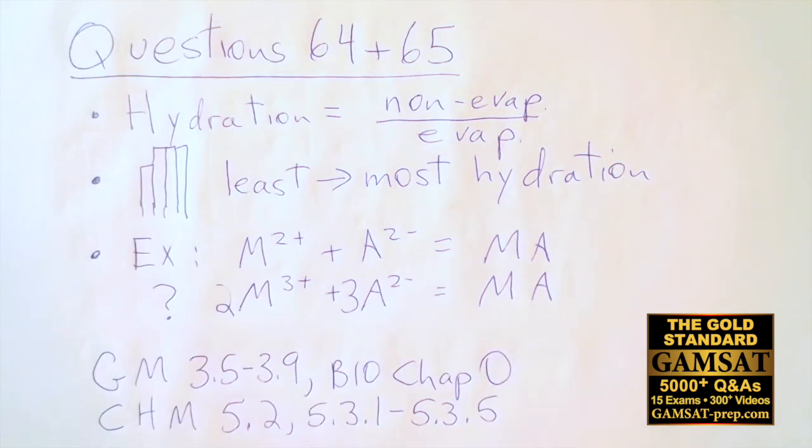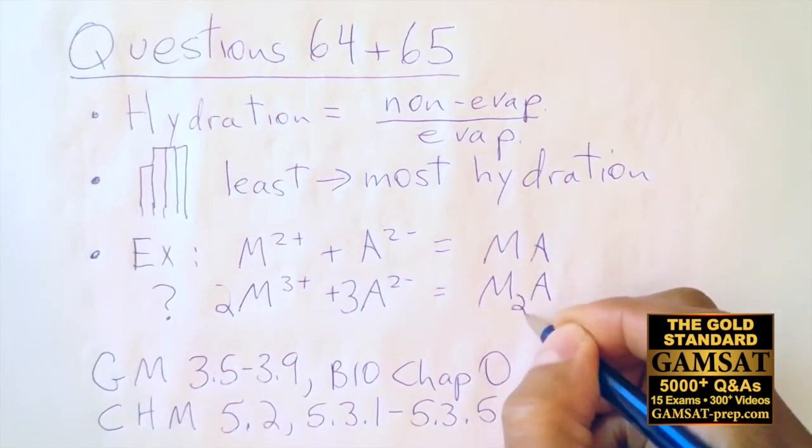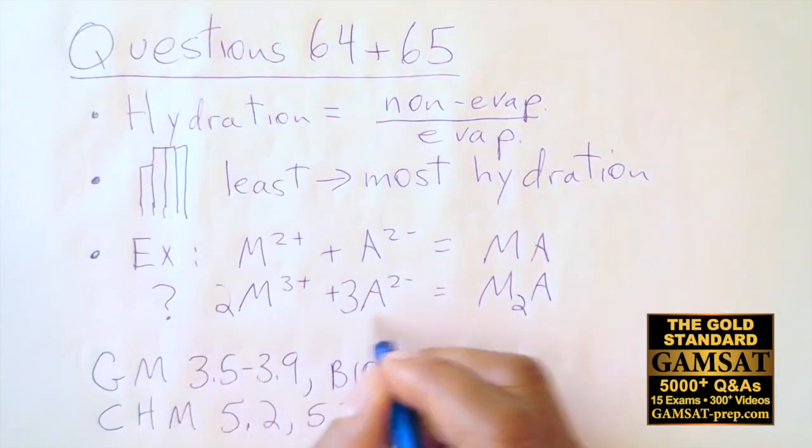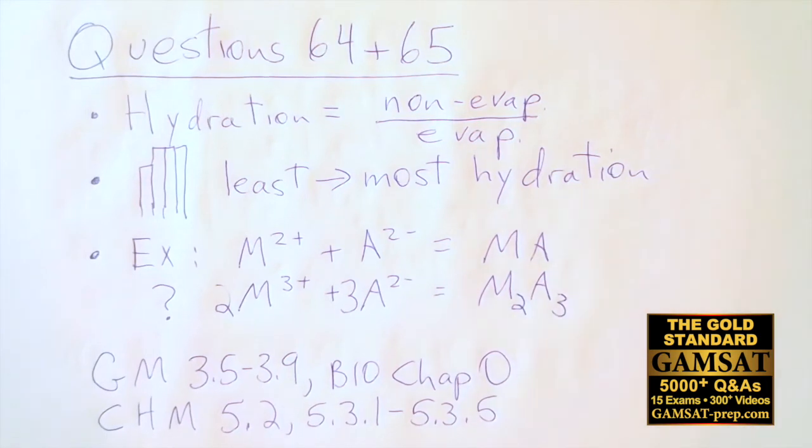And then the overall charge would be plus six minus six zero, and that would equal the charge here which is neutral. So now I have to deal with the subscripts on this side to balance the number of moles. I would put a two over here because there's two M's and three A's, so I need to put a three there. Now the charges are balanced and the number of moles are balanced.